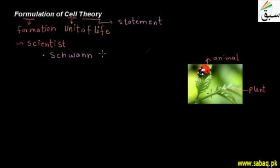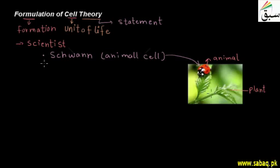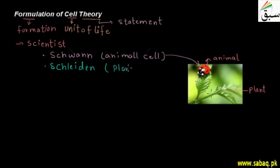Schwann looked at animal cells and studied animal tissues, finding that animal tissues are made by animal cells. Then we have another scientist, Schleiden, who studied plant tissues and also found that plant tissues are made by cells. He worked on plant cells.